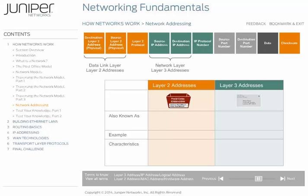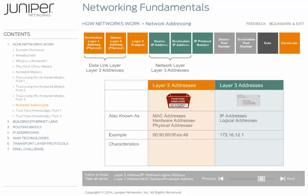By the way, Layer 2 addresses are sometimes referred to as MAC addresses, hardware addresses, or physical addresses. Layer 3 addresses are also known as IP addresses or logical addresses. Later in this course, we'll take a look at the meaning behind the digits in MAC addresses and IP addresses. Like a mailing address for a letter, a Layer 3 address identifies a unique destination. Just as there's only one mailing address at your house, on a network a network administrator assigns each computer a unique Layer 3 address. The destination and source Layer 3 addresses identify the communicating computers or endpoints, just like an envelope has a destination address and a return address.